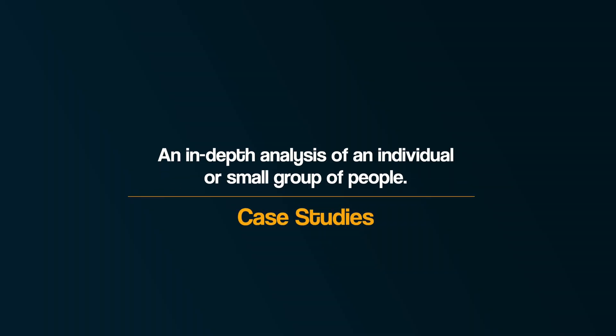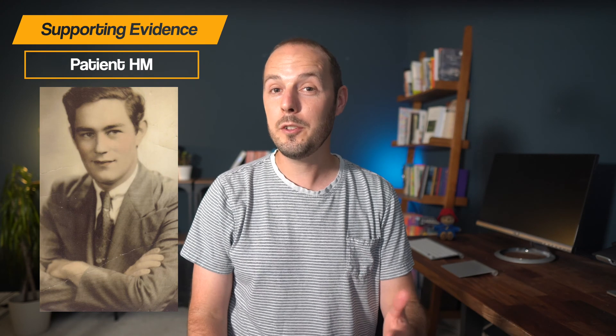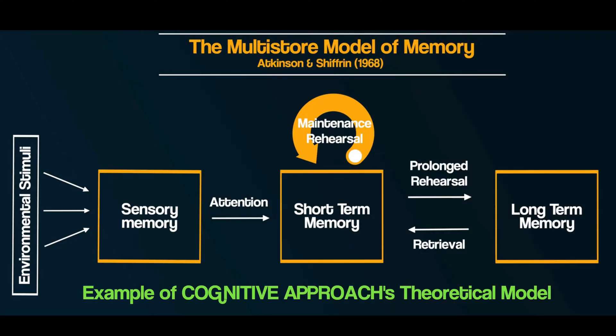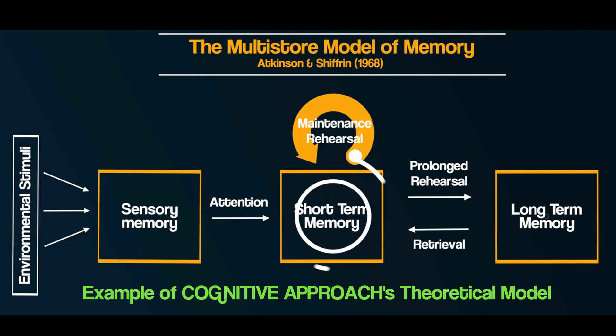Other supporting research comes not from laboratory experiments, but from case studies. Case studies are an in-depth analysis of an individual or a small group of people. One of the most famous and studied individuals in the history of psychology was a man known as patient HM. The case study of HM provides further support for the theoretical model known as the multi-store model, which proposes that there are separate stores for three different types of memory — sensory memory, short-term memory, and long-term memory — and that information goes through each of these stores in a linear ordered process.